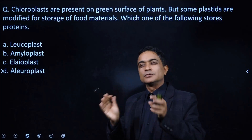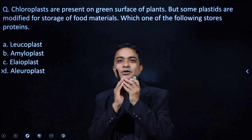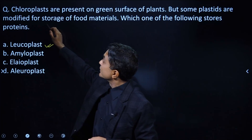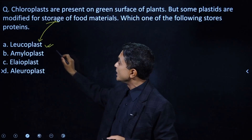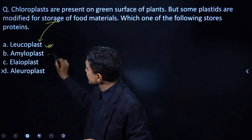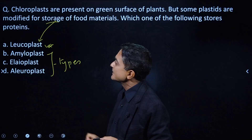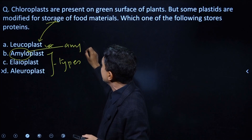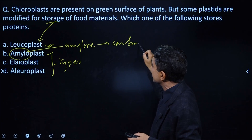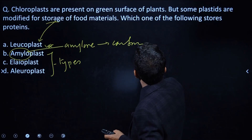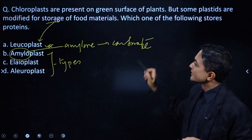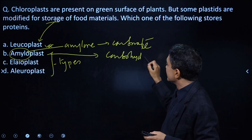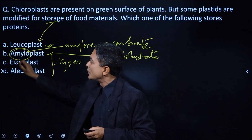Leukoplasts are the colorless plastids. If you have a carbohydrate store, that is amyloplasts. If you have a fat or oil store, that is elaioplasts. Leukoplasts are subdivided based on what they store — carbohydrate, protein, or fat.